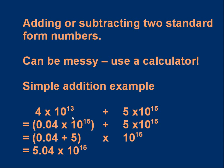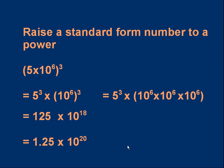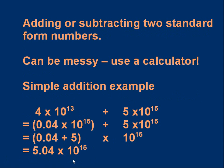If we increase 10¹³ by a factor of 100, we must decrease 4 by a factor of 100 to compensate, giving 0.04×10¹⁵ — the same value as 4×10¹³. Now we have 0.04×10¹⁵ plus 5×10¹⁵. Factorising out 10¹⁵ gives (0.04+5)×10¹⁵ = 5.04×10¹⁵. The same method applies for subtracting standard form numbers.